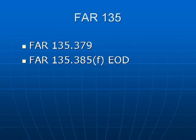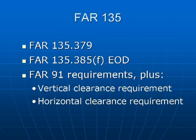What does Part 135 say with regards to takeoff? It says we need to comply with all Part 91 requirements, plus we introduce for the first time a vertical clearance requirement over obstacles as well as a horizontal clearance requirement. It should be noted that the requirements of Part 135 are identical to those of Part 121 — that is, major airlines need to comply with the same regulations that those operating a corporate jet under Part 135 need to consider.